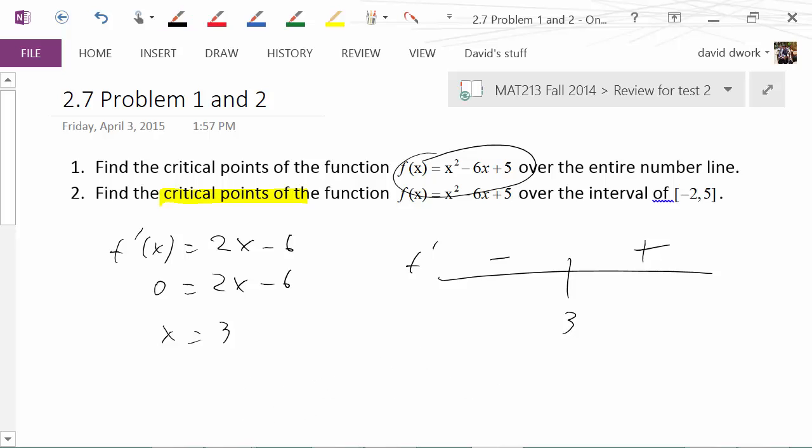When you substitute in a thousand, you can very quickly see 2 times a thousand is 2,000, take away 6, hey, that's positive. So we can now say with certitude that this thing - well, because there's no asymptote or anything crazy going on - we can say that this thing is a max or a min.